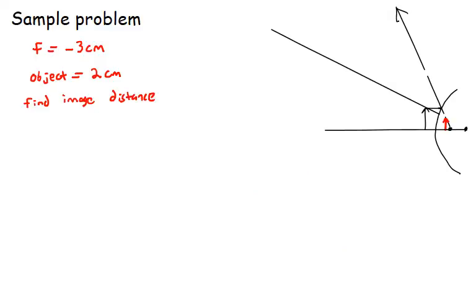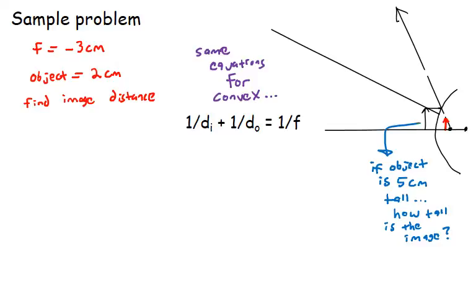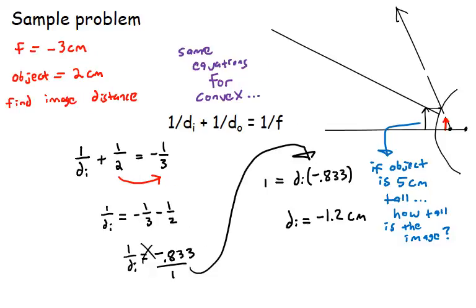So let's put some values to this. Let's say that the focus is negative 3 centimeters and the object is 2 centimeters, and we want to find the image distance. So go ahead and pause the clip and calculate this. All right, so 1 over DO plus 1 over DI is 1 over focal length, and we should get negative 1.2 centimeters as our image distance.